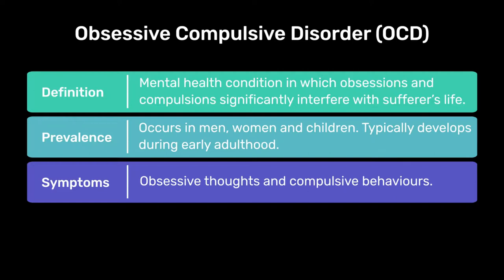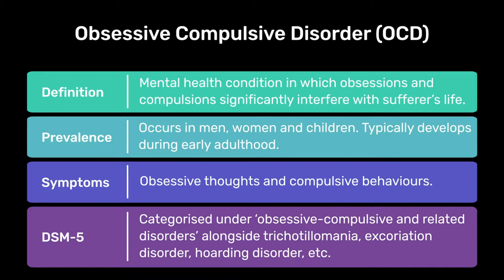In the current DSM-5, OCD is categorised within its own category of obsessions, compulsions and related disorders, alongside a number of other similar disorders including trichotillomania, which is characterised by excessive hair pulling; excoriation disorder, which is picking of the skin; and hoarding disorder, which is the compulsive need to hold onto items of no significant value and being unable to part with them. All of these disorders are very similar and can be treated in a very similar way.